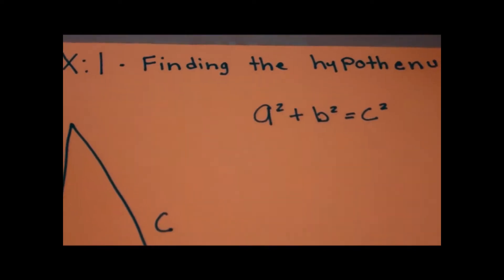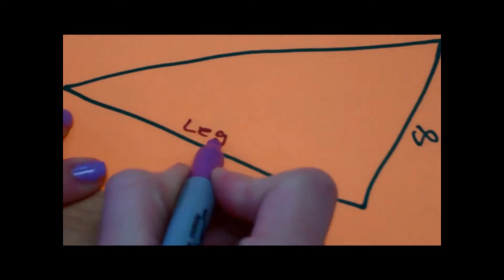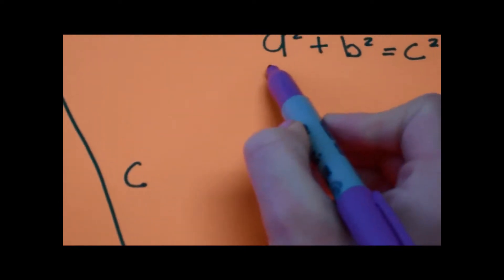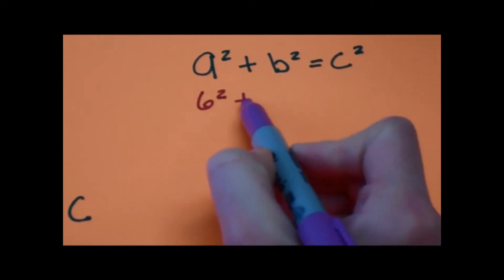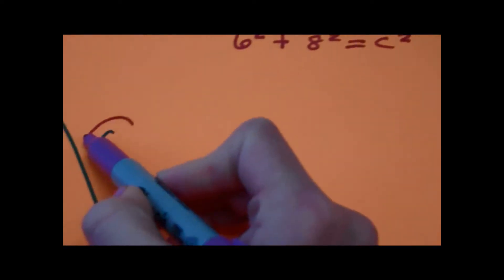The formula to find the hypotenuse is A squared plus B squared equals C squared. 6 is a leg, and 8 is a leg. So that would mean 6 squared plus 8 squared equals C squared, which is here.